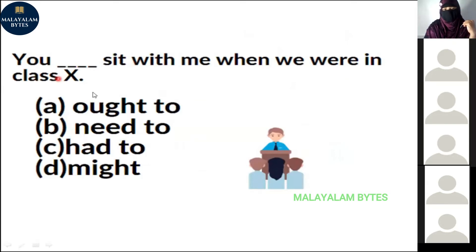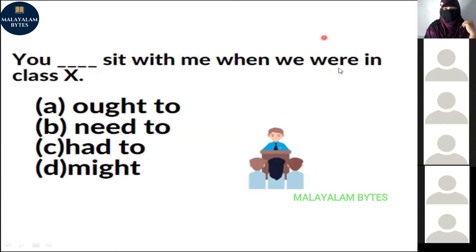Next: 'He sit with me when we were in class 10.' Options: ought to, need to, had to, might. Why did you choose 'had to'? The word 'were' indicates it is in the past. Even though 'ought to' and 'need to' might seem possible, the past tense hint 'were' tells us 'had to' is the most apt answer. That's very good — 'had to' is correct.